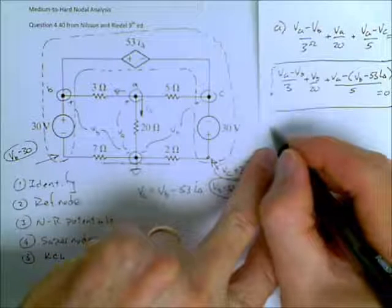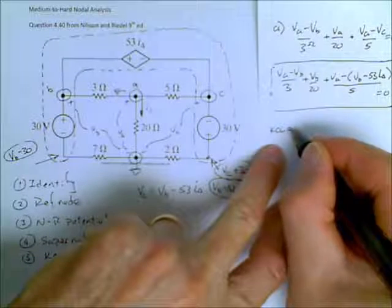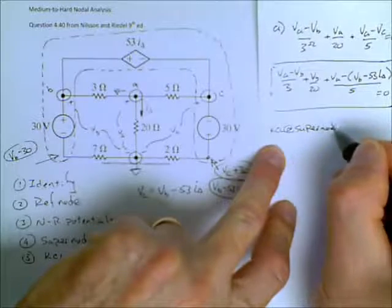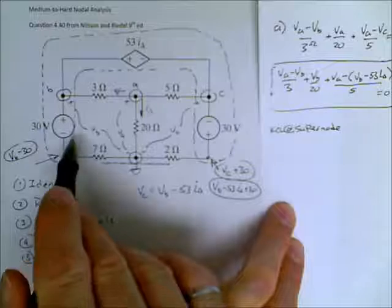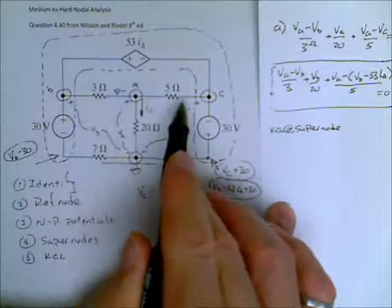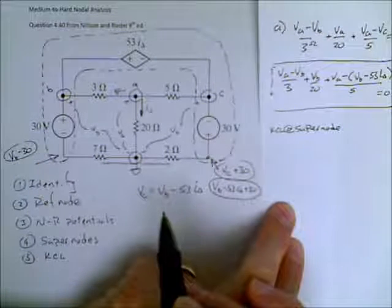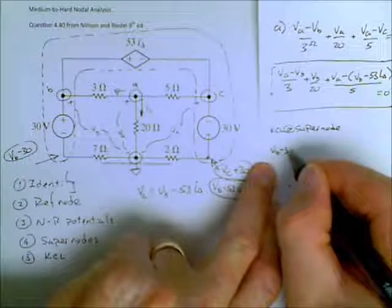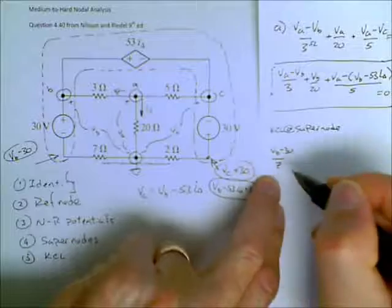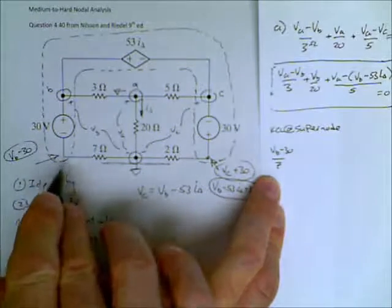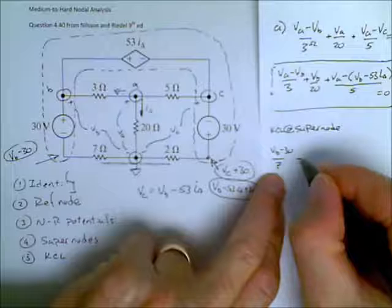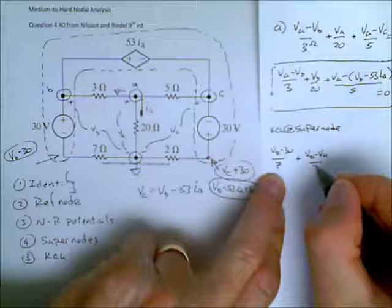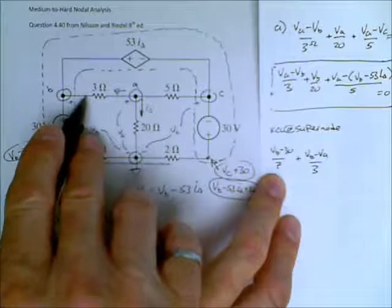Let's look at the KCL at super node. We can see that there is one, two, three, four connections to that super node. And so, we say VB minus 30 all divided by seven. That's the current that leaves down here. Plus VB minus VA over three. That's the current that leads to this branch.